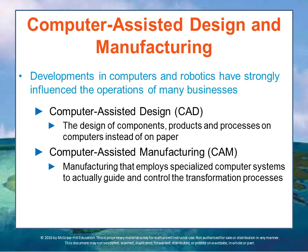The printer is able to use layers of liquid powder, paper, or metal to construct a 3D model. Computer-assisted manufacturing goes a step further, employing specialized computer systems to actually guide and control the transformation processes. Such systems can monitor the transformation process, gather information about the equipment and materials used, and also about the product itself as it goes through various stages of production.